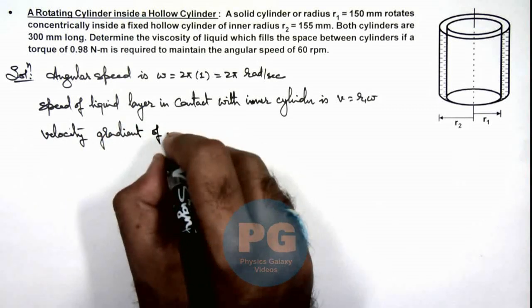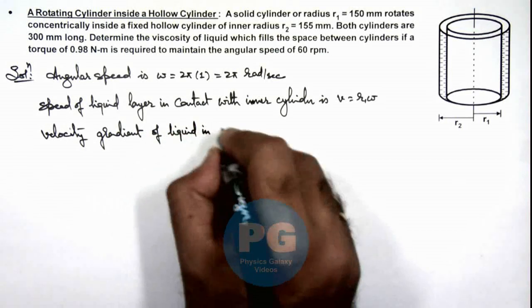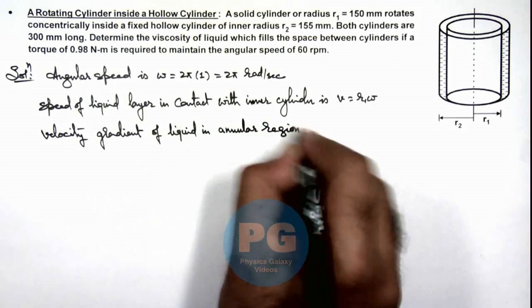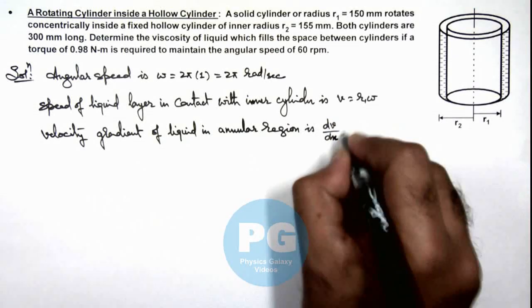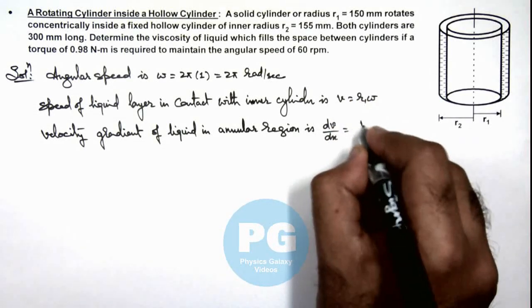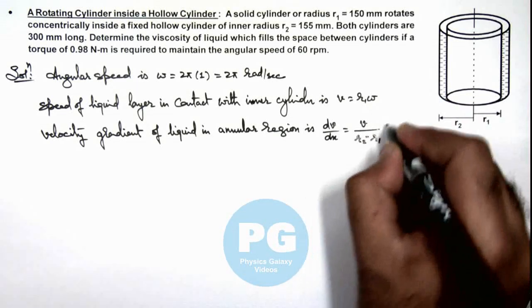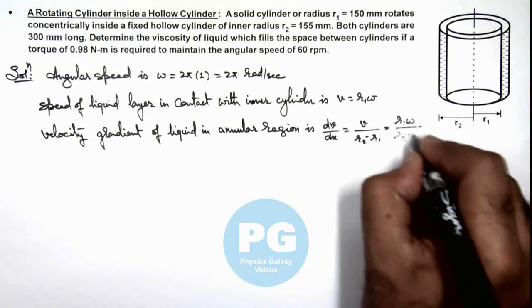Of liquid in the annular region is: this velocity gradient dv by dx we can write as v divided by the separation, that is r2 minus r1, so this r1 omega divided by r2 minus r1.